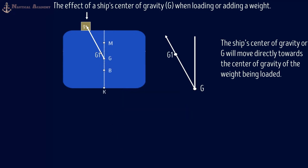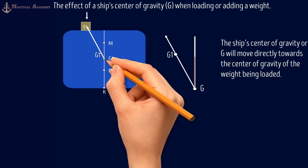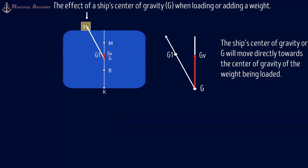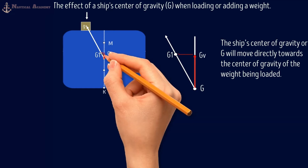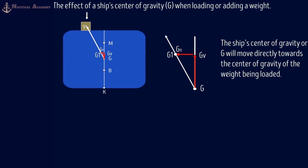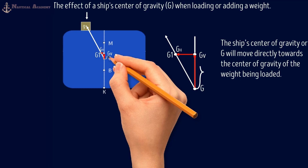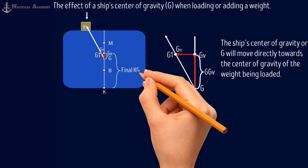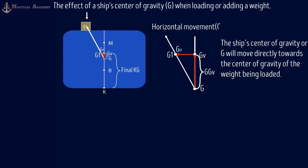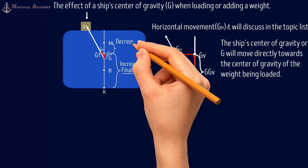In this example there are two movements of G: the vertical shift from G to GV, and the horizontal shift from G to GH. In this particular scenario, we will only consider the vertical shift GGV since our concern is only KG. The horizontal movement of G will be discussed in another video on the topic of list or ship's listing. So in this case, the effect will be an increase in KG and a decrease in initial metacentric height GM.